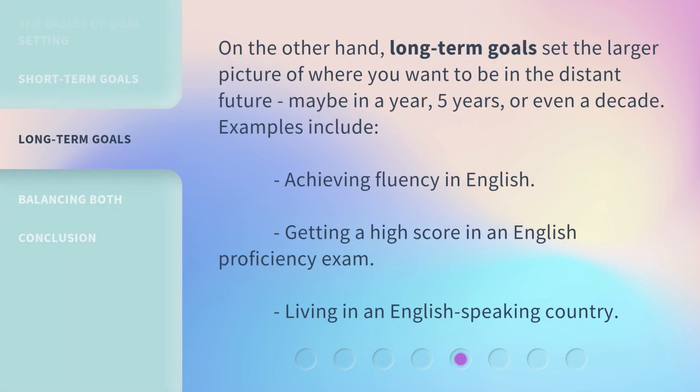On the other hand, long-term goals set the larger picture of where you want to be in the distant future — maybe in a year, five years, or even a decade. Examples include achieving fluency in English, getting a high score in an English proficiency exam, or living in an English-speaking country.